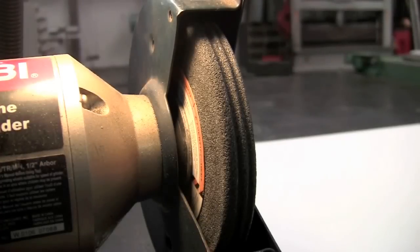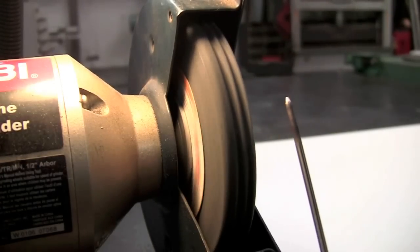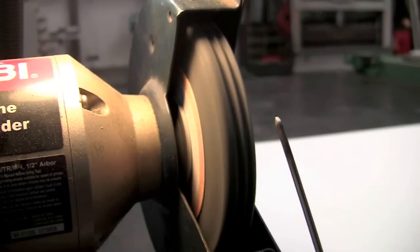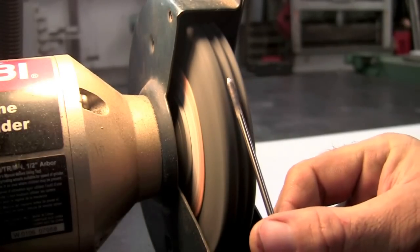For sharpening your tungsten, you want to do it with the grain of the wheel. I choose to do it up so I can actually see the point that I'm putting on the tungsten.